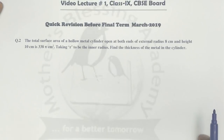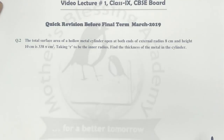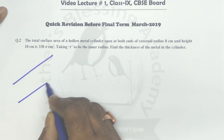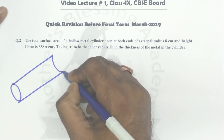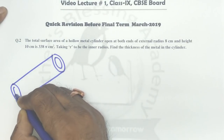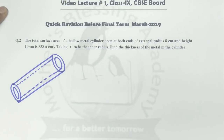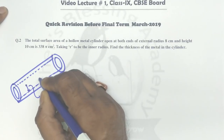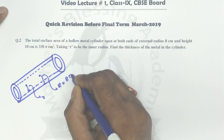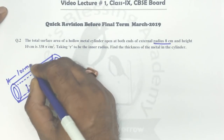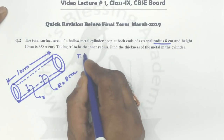The second question says: the total surface area of a hollow metallic cylinder open at both ends, of external radius 8 centimeters and height 10 centimeters, is 338π cm². You need to find the inner radius and the thickness of the metal. A hollow cylinder has two radii — the internal small r and outer radius R — but only one height.